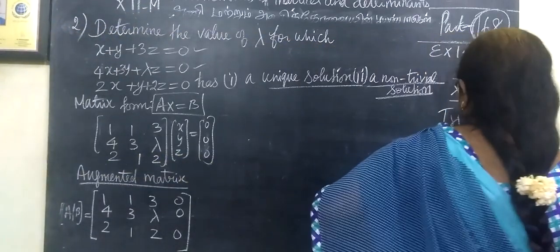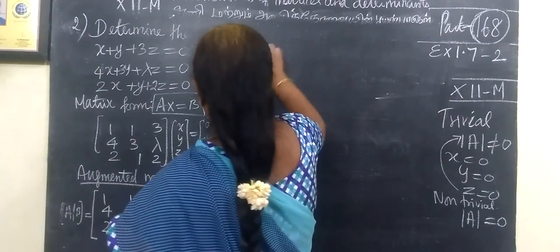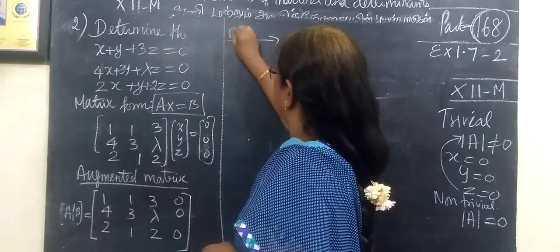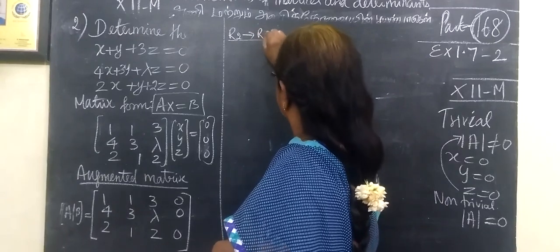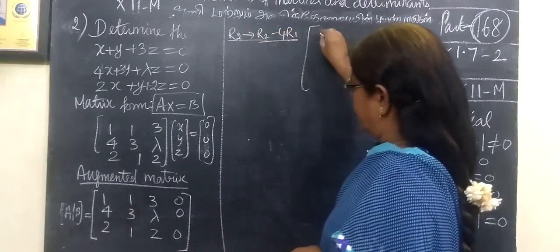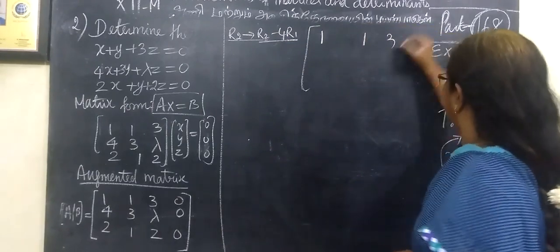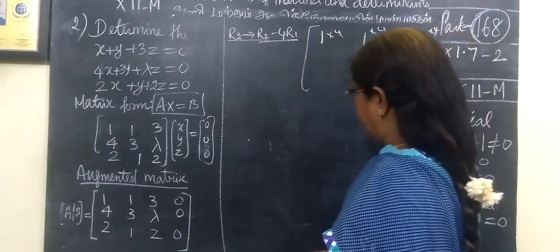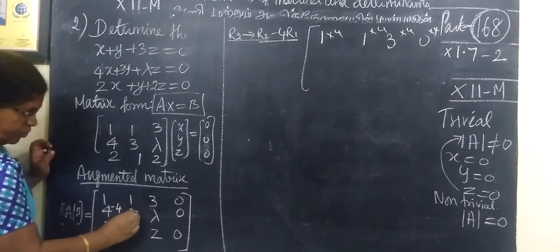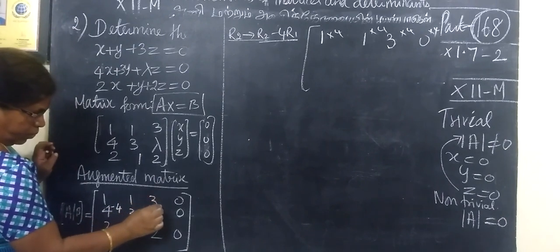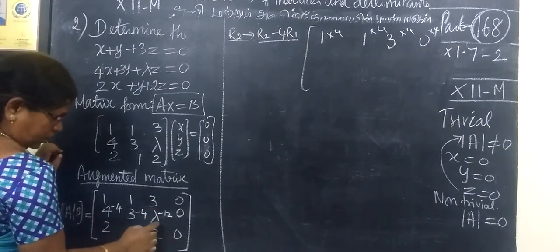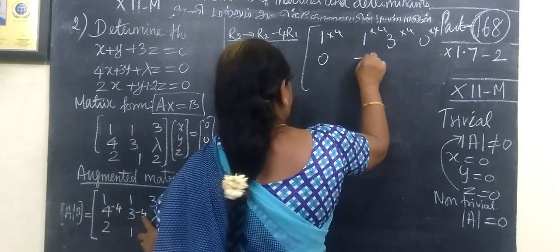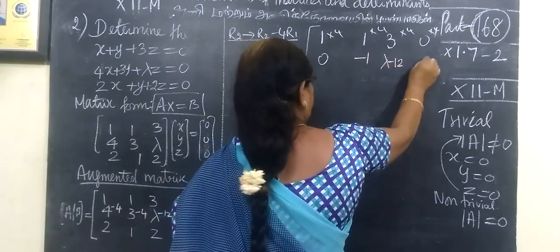Now consider the determinant. This is not equal to 0. Calculate: 4×4×4, 1×4 is 4, then minus 4, then minus 4, 4, 12, so we get minus 12. Then 2 here is 2, and our answer is 0. Then minus 1, then lambda minus 12 equals 0.